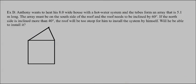Moving on. Anthony wants to heat his 8.0 wide house with a solar hot water system, and the tubes form an array that is 5.1 meters long. The array must be on the south side of the roof, and the roof needs to be inclined by 60 degrees. Let's label that. This is going to be 60 degrees, and here's our 5.1 meter array. We also know that the length of his house is 8.0 meters. If the north side is inclined by more than 40 degrees, the roof will be too steep for him to install the system by himself. So we actually want to find this angle right here to see if it's more or less than 40 degrees.